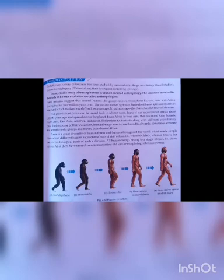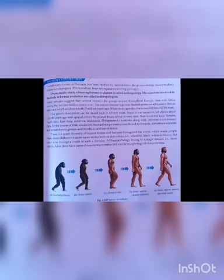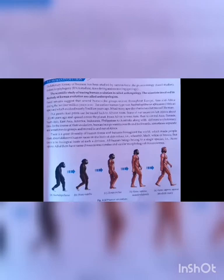In the course of their evolution, human beings moved forwards and backwards, sometimes separately and sometimes in groups, moving in and out of Africa. There is great diversity of human forms and features throughout the world, which made people think about different human races on the basis of skin color — white, black and brown — but there is no biological basis for such a division. All human beings belong to a single species, Homo sapiens, and all have the same chromosome number and similar morphology of chromosomes.